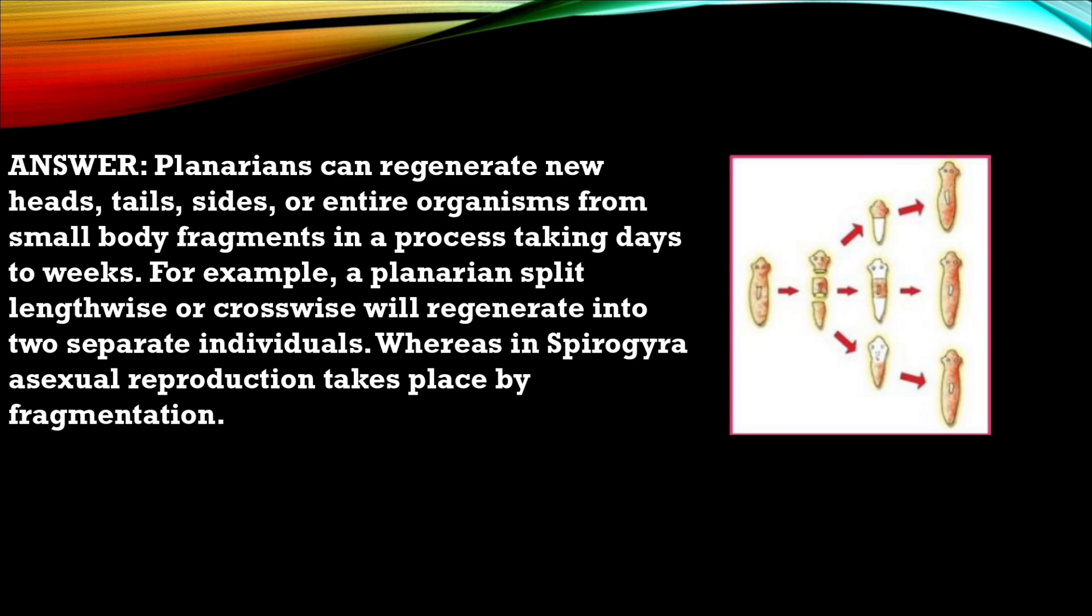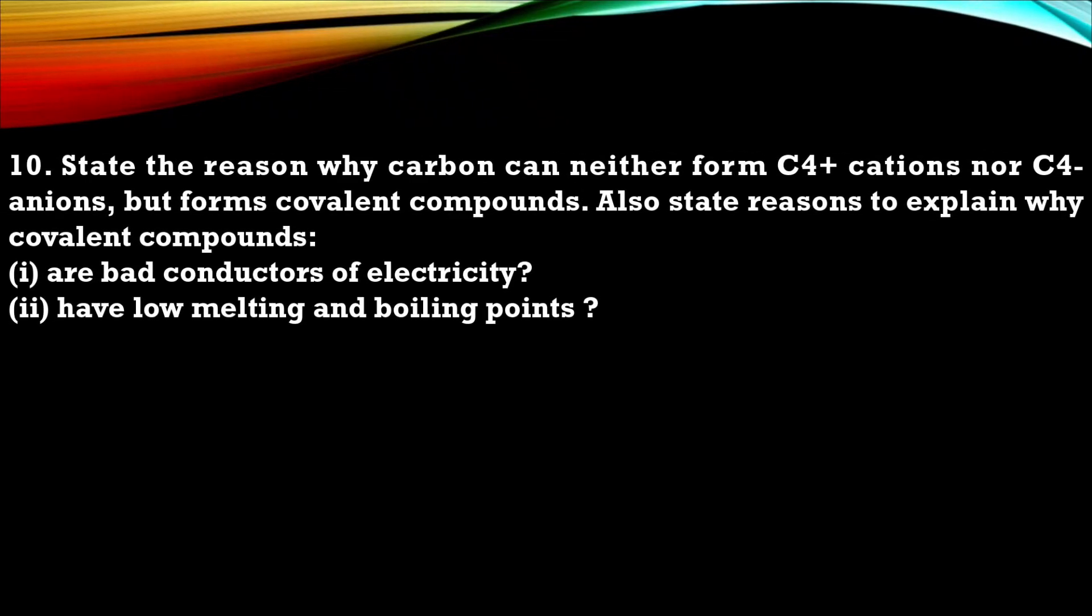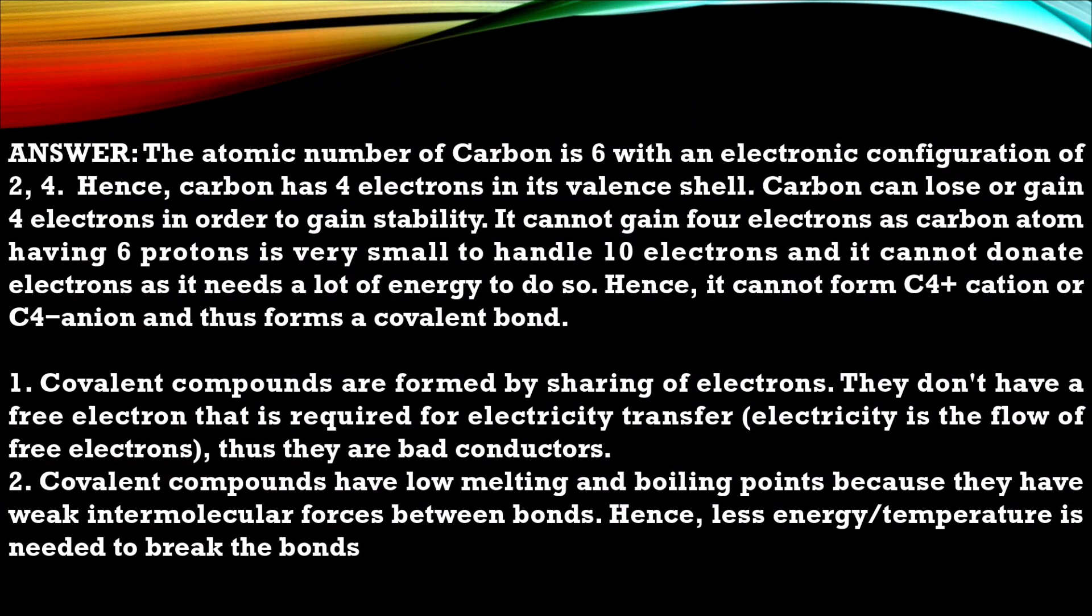Question number 10. State the reason why carbon can neither form C4 plus cation nor C4 minus anion but form covalent compound. Also state reason to explain why covalent compound: 1. Are bad conductor of electricity. 2. Have low melting and boiling point. So this is the answer for that question.